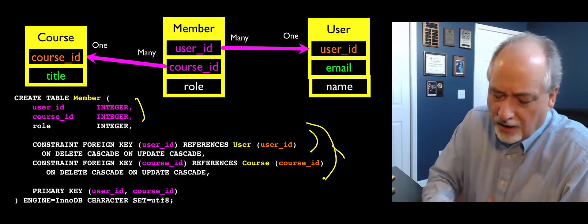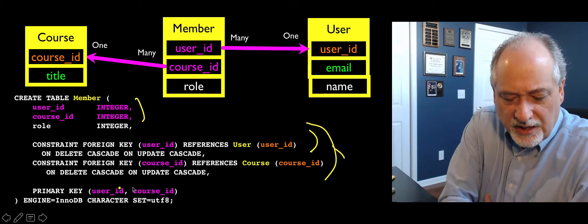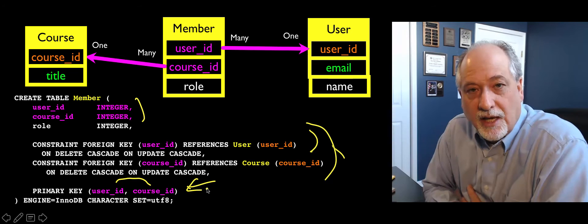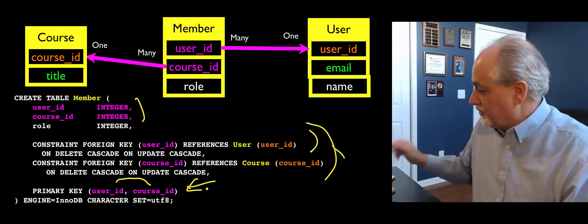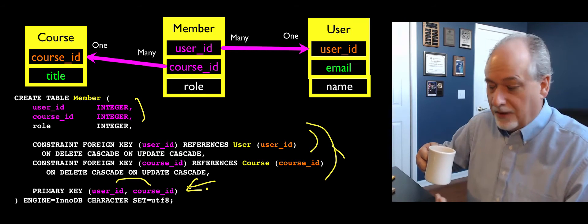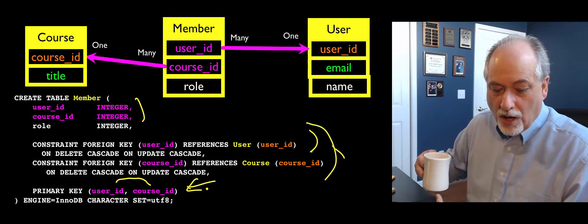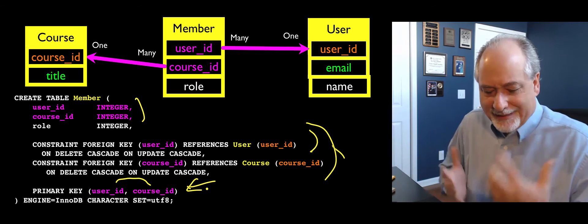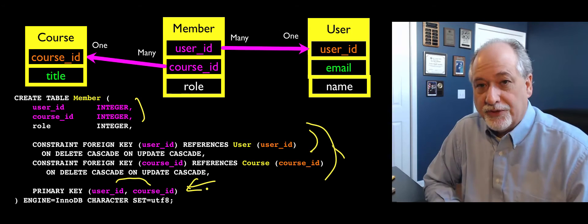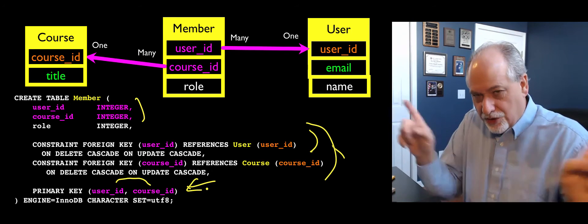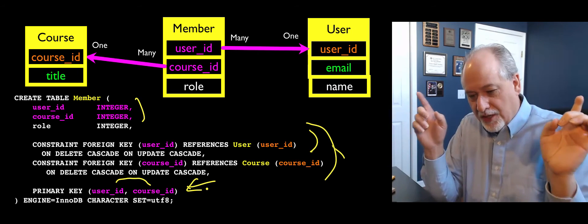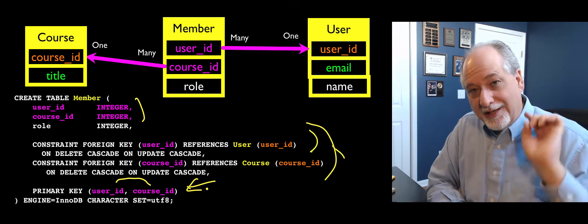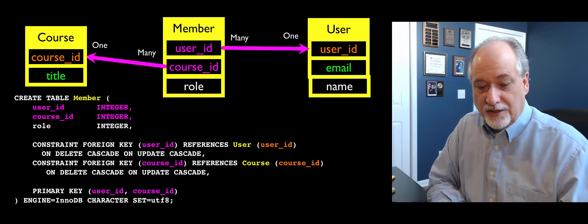That's helpful with our ON UPDATE clauses. Then we declare the primary key as the combination of user ID and course ID. That adds a uniqueness constraint as well — it says we're not going to allow the pair one-one to appear in more than one row. So the picture of the tables we build is two foreign keys going in opposite directions and no standalone primary key. The primary key is the combination of the two keys.